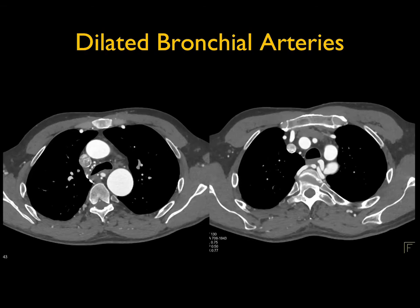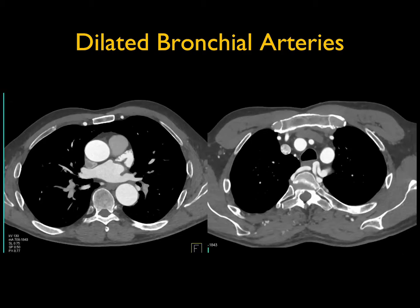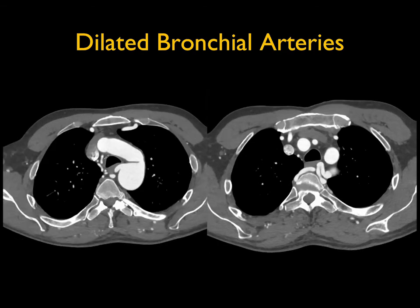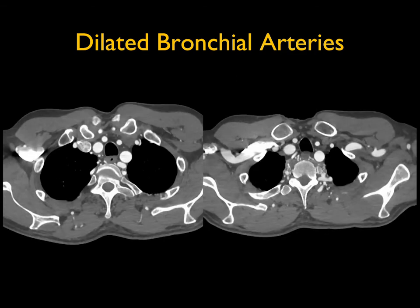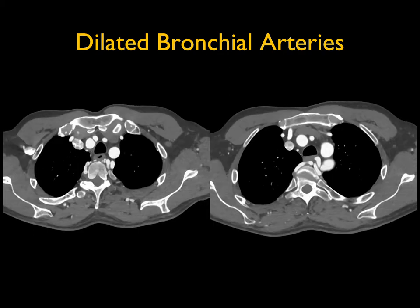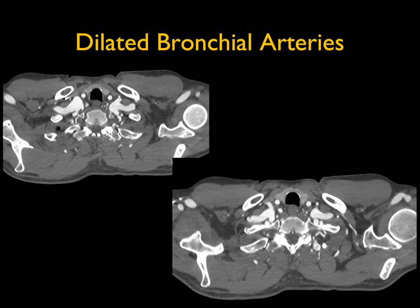This is an interesting case: dilated bronchial arteries can be confused with nodes, particularly on non-contrast scans. You can see the dilated bronchial arteries here — we can see this with tumor, with pulmonary artery stenosis, with prominent collaterals due to compression of other vessels in the mediastinum, or as part of congenital heart disease. You can see very nicely the branches of the dilated bronchial arteries coming off the aorta in the posterior, middle, and anterior mediastinum — it's one of those things that can be somewhat confusing at times.